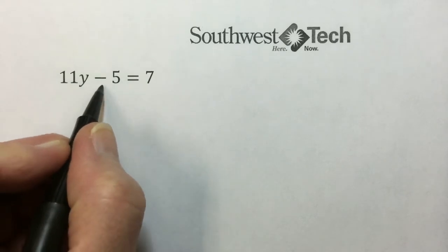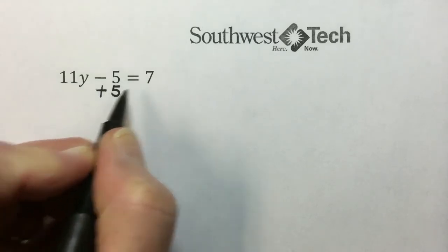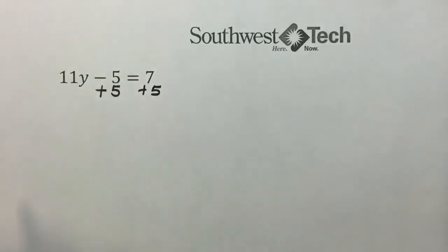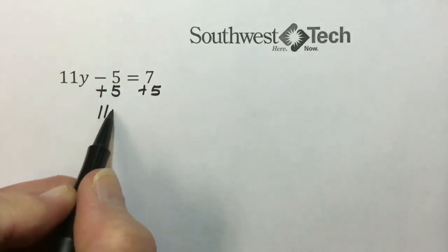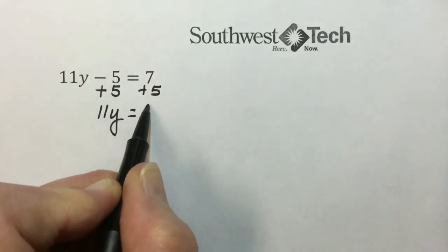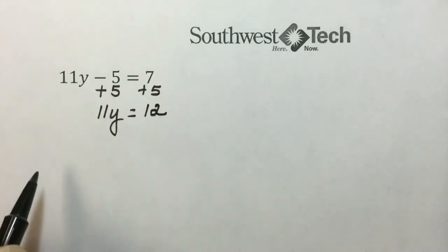So to undo subtraction using the addition property of equality, we'll add 5 to both sides. The 5s cancel out, leaving 11y. And simplifying on the right, we end up with 12.